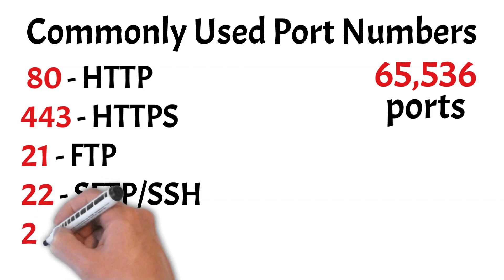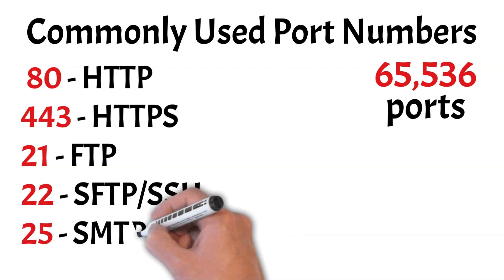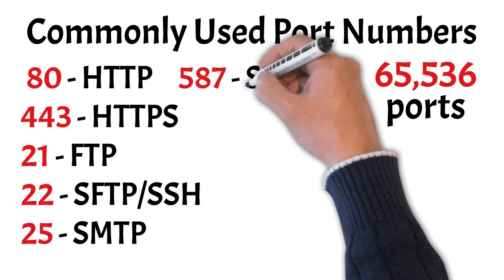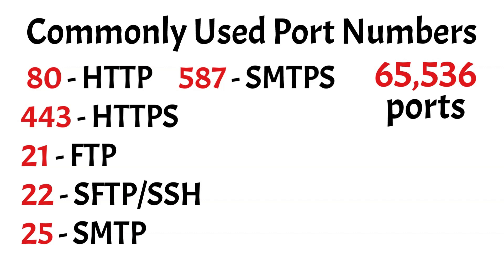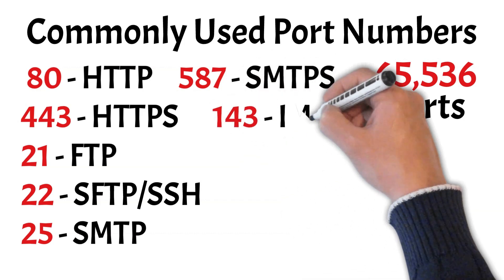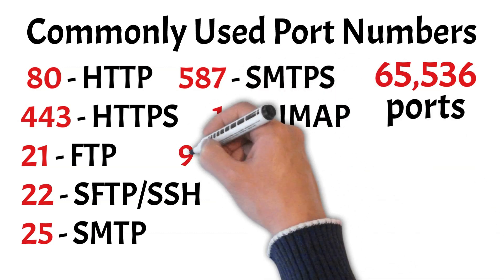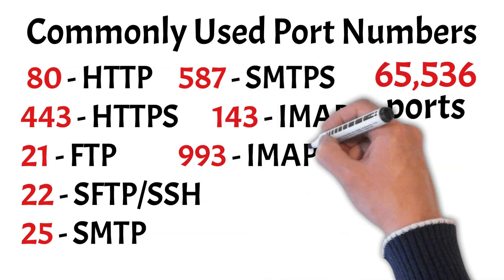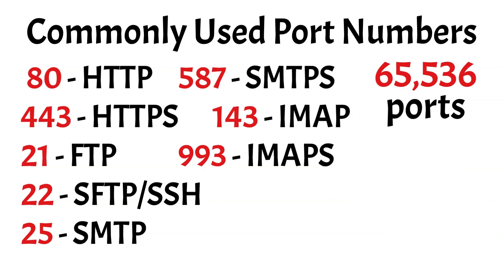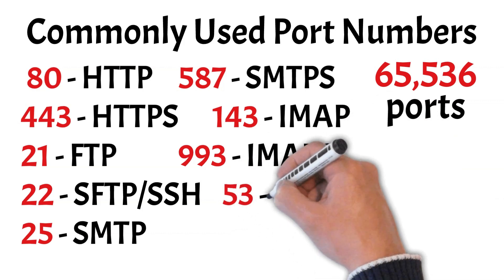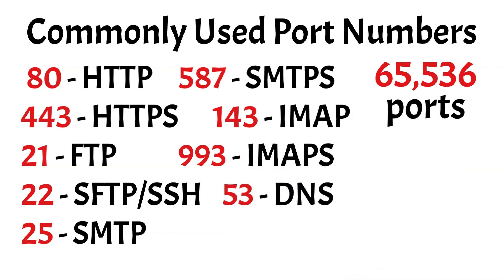Email services use port 25 and port 587 for sending emails with SMTP, while port 143 and port 993 handle receiving emails with IMAP. The Domain Name System, or DNS, runs on port 53, helping convert website names into IP addresses.